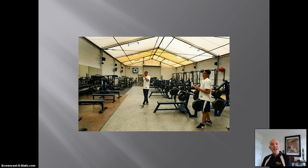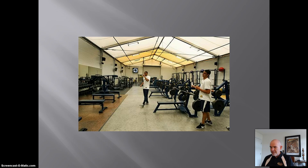Coach recognizes the error of his ways and now decides to vary the interval of reinforcement so that it averages around ten minutes each time. We call this a variable interval schedule of reinforcement. It reinforces a slightly higher rate of behavior — it's a little better than a fixed interval schedule. Our example would be called a VI10.